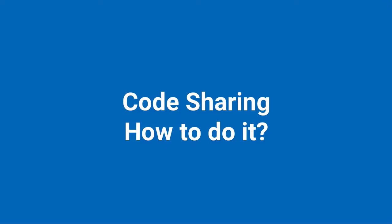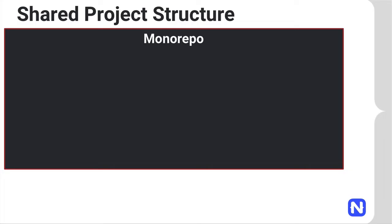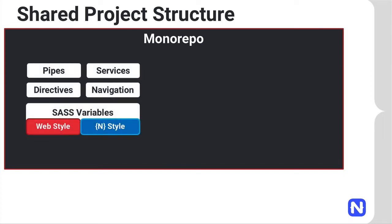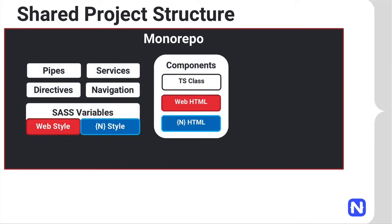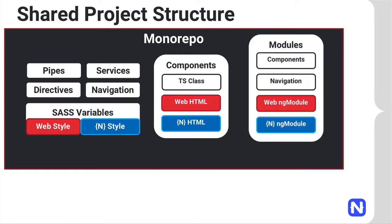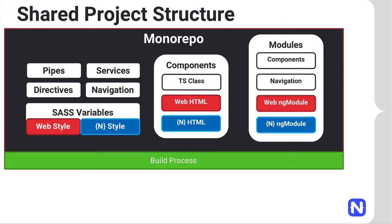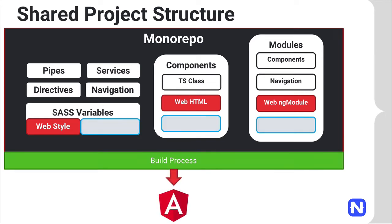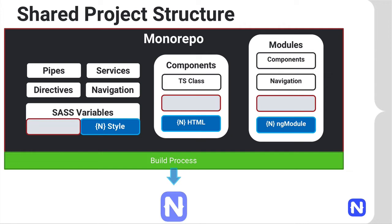The whole idea is to have a monorepo project that will have all our pipes, services, and directives. We'll have our components which share the TypeScript class code, but with separate web and NativeScript HTML files. We can also share a lot of the modules and their components. Navigation will be shared, but you'll probably have two separate NgModule files — one for web and one for NativeScript. The build process then takes the shared and web files to generate a web Angular app, or the shared and NativeScript files to generate a NativeScript app.